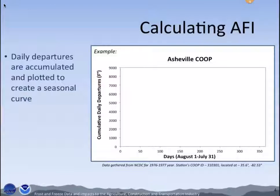Using an actual co-op station as an example: if we had a plot of daily departures — which is the difference between the mean air temperature and 32 degrees Fahrenheit — we would plot those daily departures beginning August 1st, 1976 until July 31st, 1977. This is what our seasonal curve would look like.